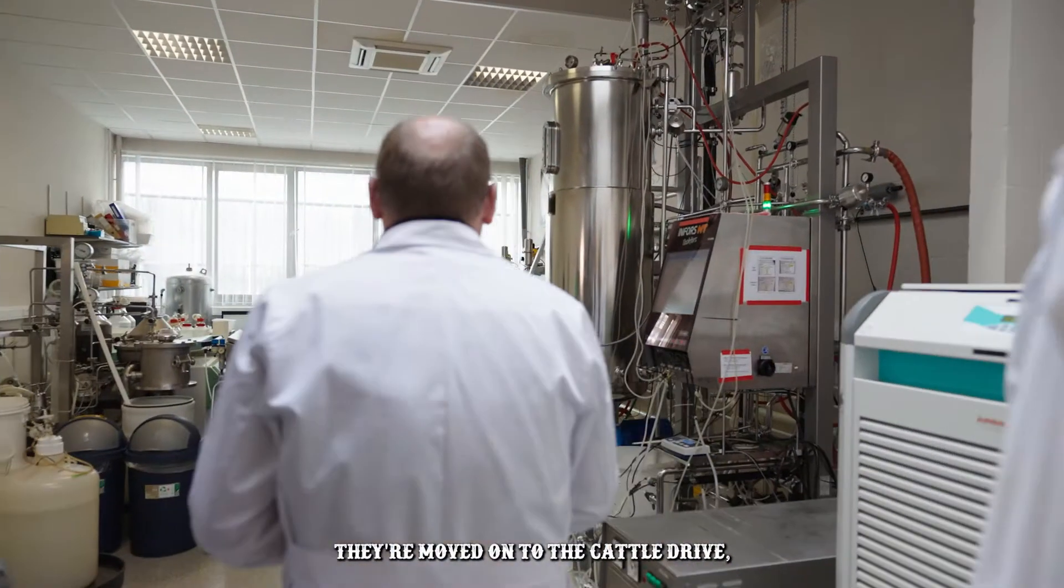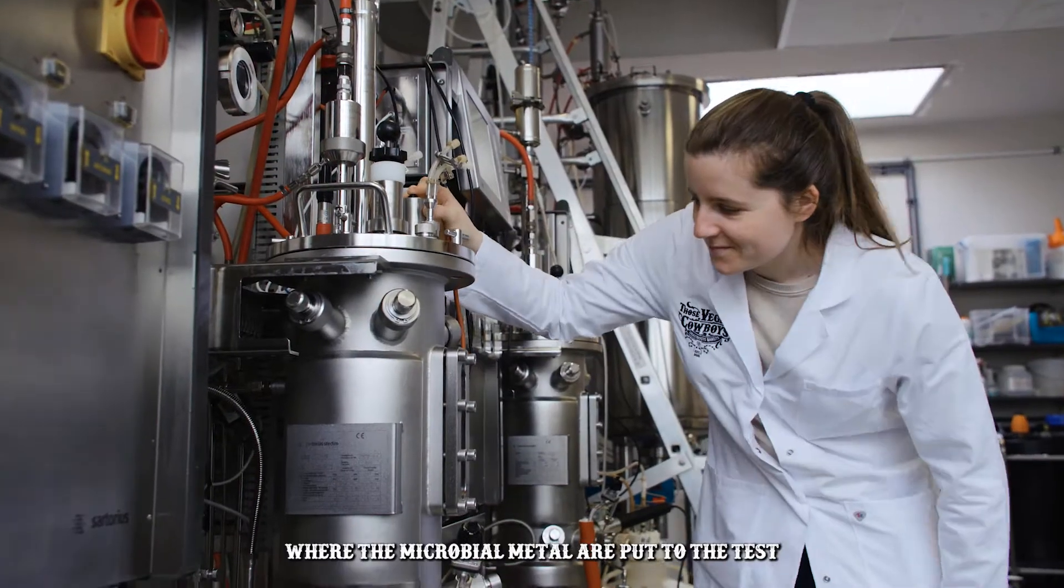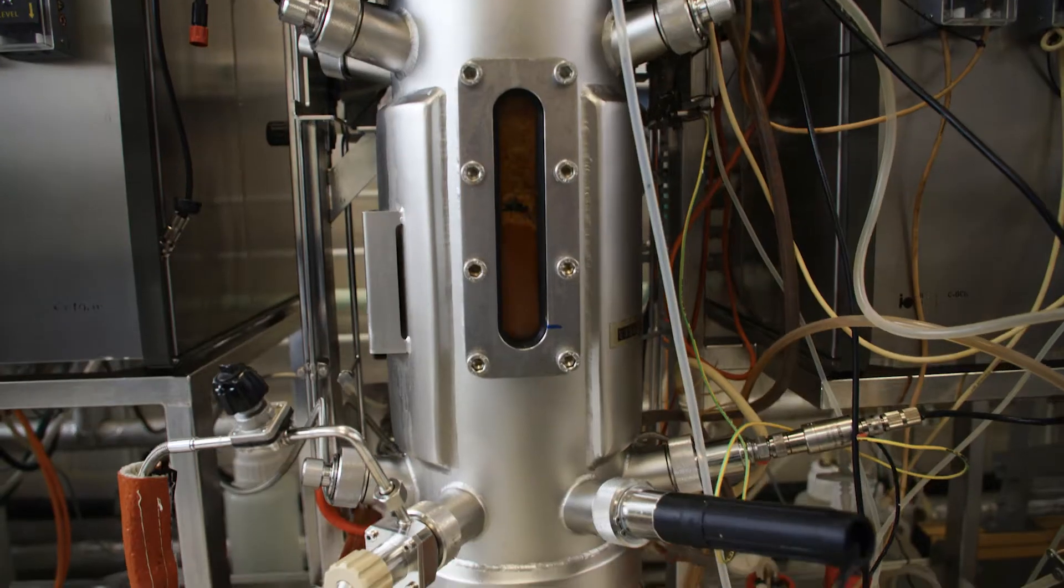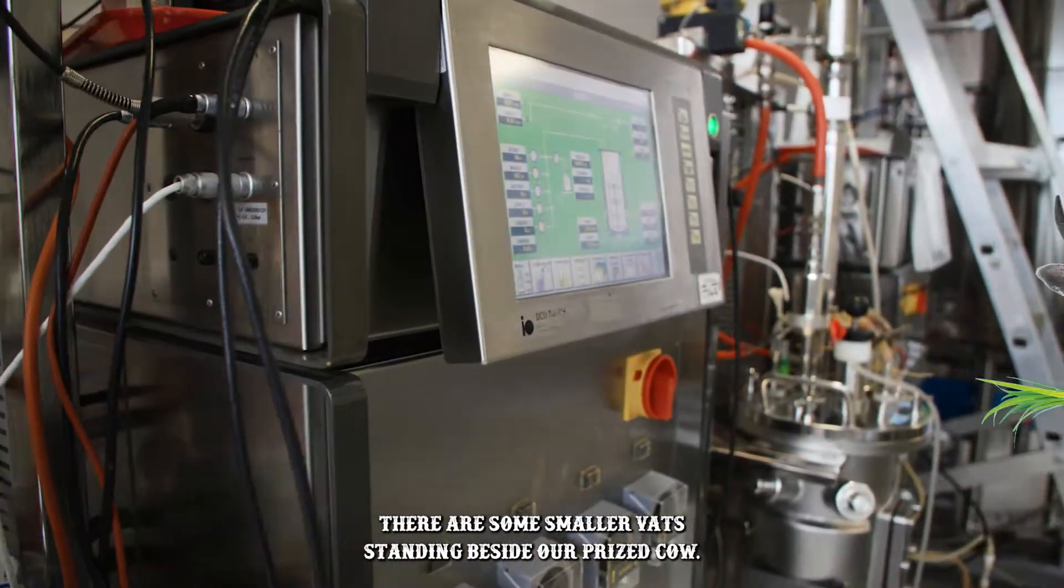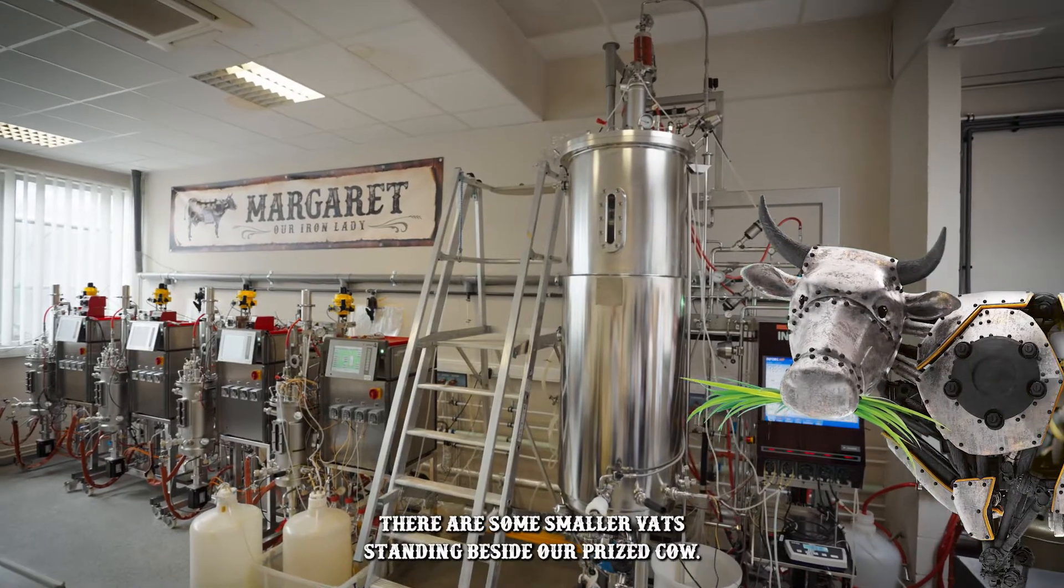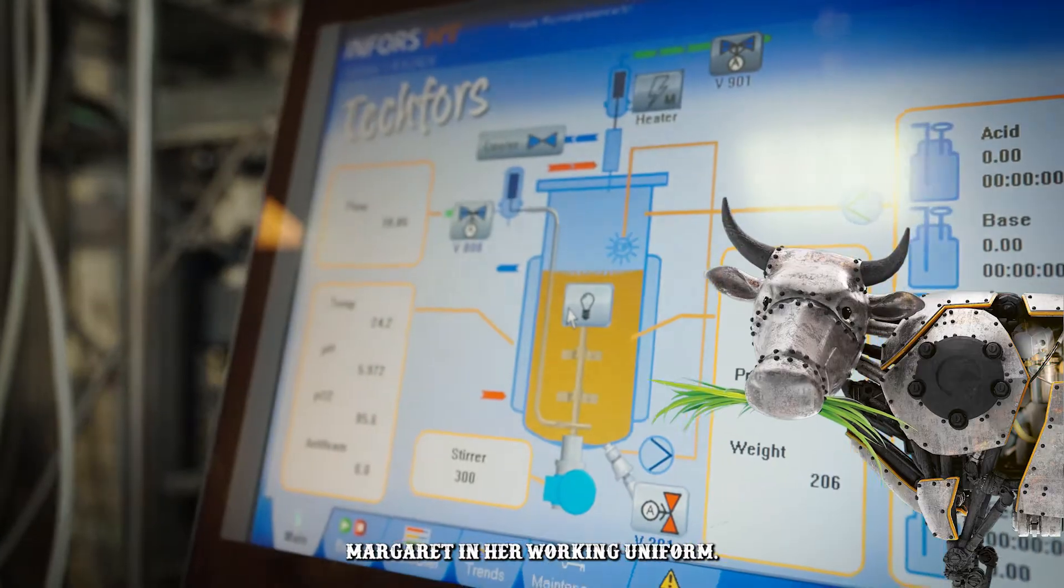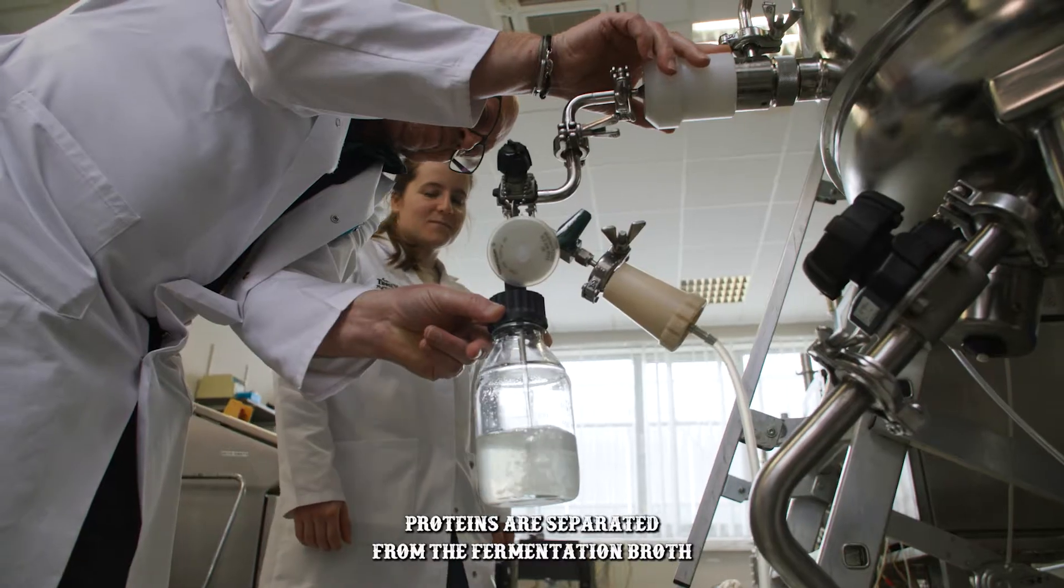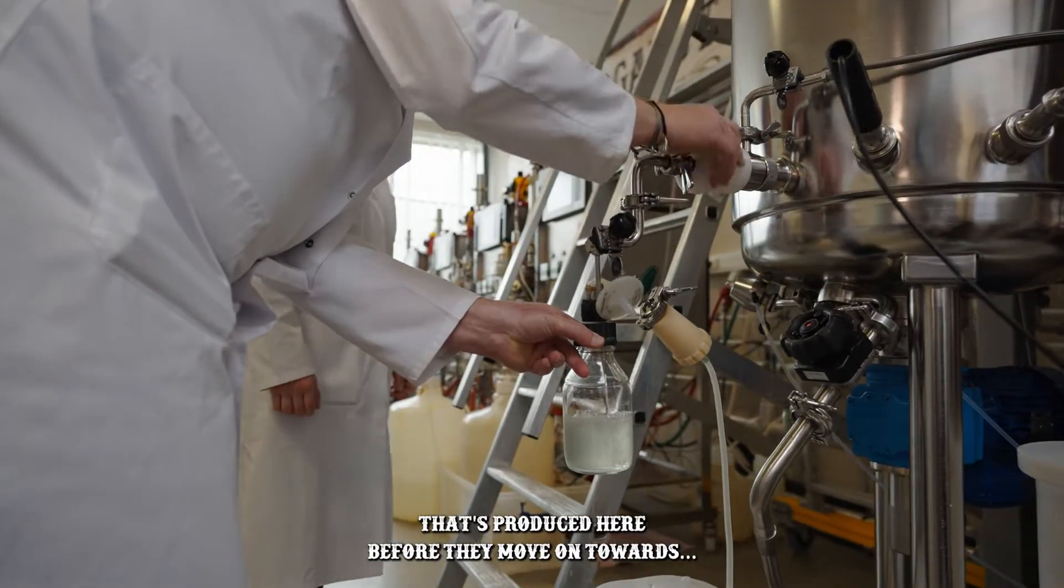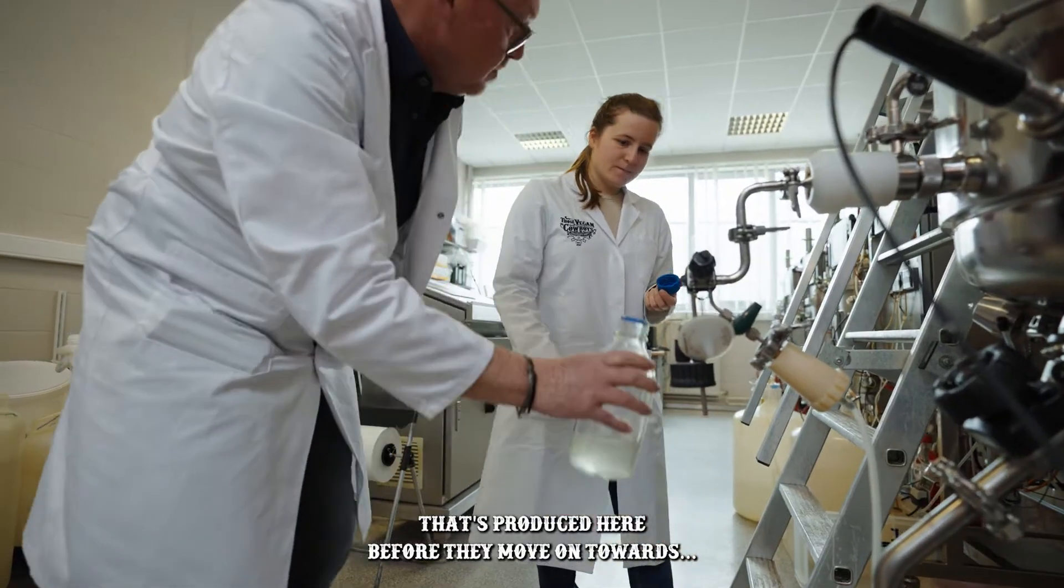If all goes as planned, they're moved on to the cattle drive, where their microbial metal is put to the test. At the cattle drive, we have some smaller vats standing beside our prized cow, Margaret, in her working uniform. The proteins are separated from the fermentation broth that's produced here before they move onwards.